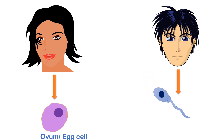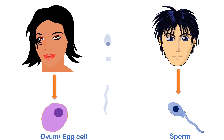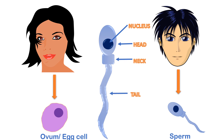Now let's understand the structure of the sperm. The sperm basically contains three main parts. First is the head, which contains the nucleus. The nucleus contains all the genetic material. Second is the neck, and third is the tail, which helps in the movement of the sperm.